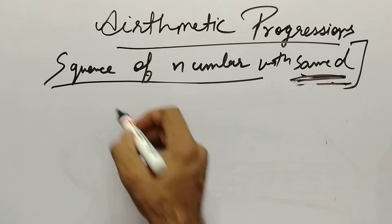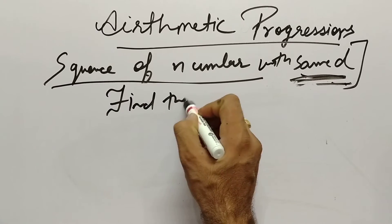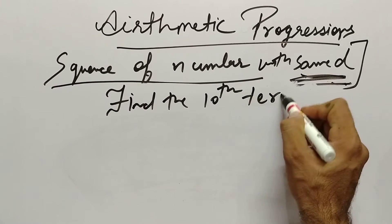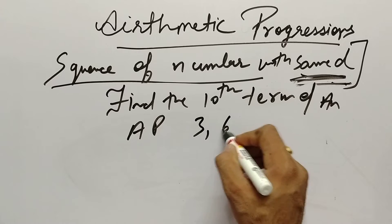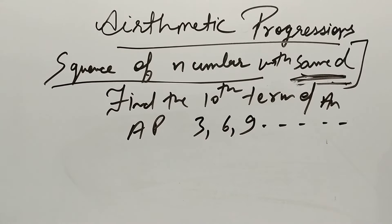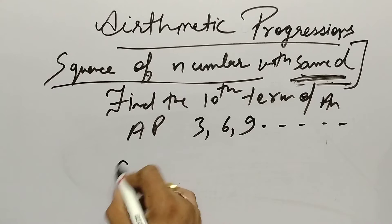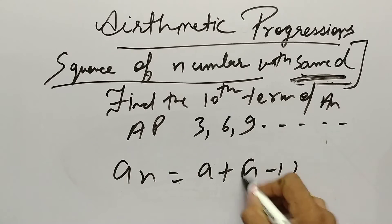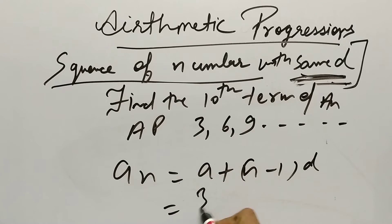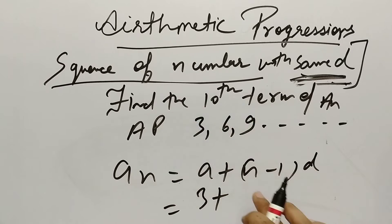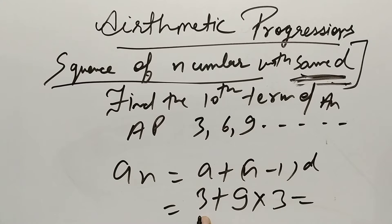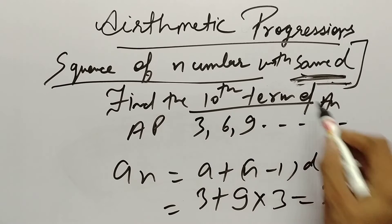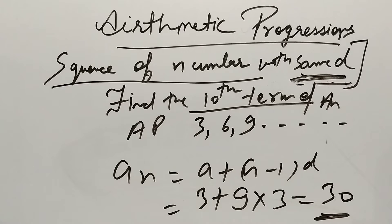Next question: Find the 10th term of an AP given by 3, 6, 9, ... Simply apply aₙ equals a plus (n minus 1) into d. a equals 3, n equals 10, so (10 minus 1) equals 9, and d equals 6 minus 3 equals 3. So 9 times 3 is 27, and 27 plus 3 is 30. The 10th term is 30.